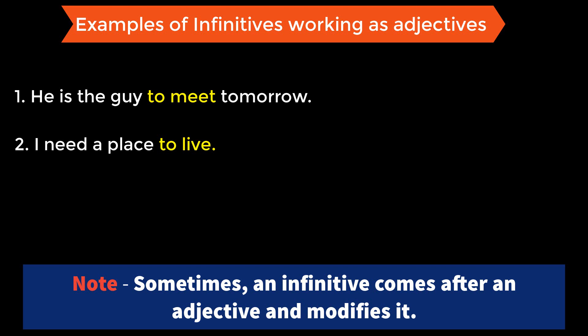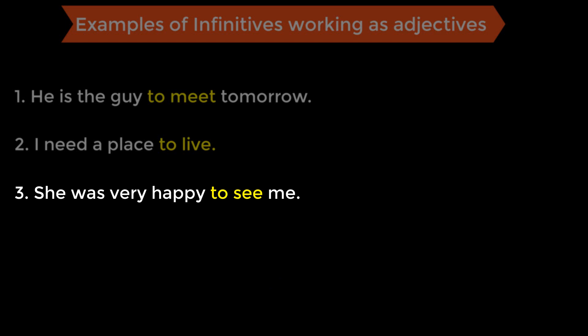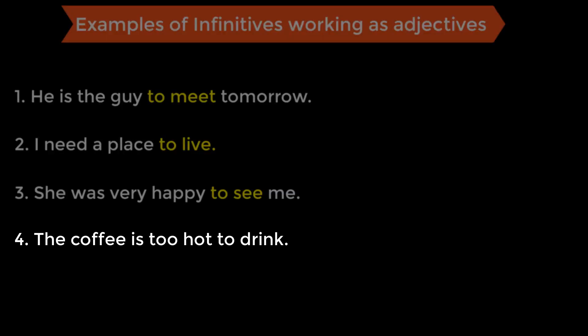Sometimes an infinitive comes right after an adjective and modifies the adjective itself. Example: 'She was very happy to see me.' Here 'to see' modifies the adjective 'happy' — she was very happy, why? To see me. Another example: 'The coffee is too hot to drink.' Here 'to drink' modifies the adjective 'hot' — too hot to drink.